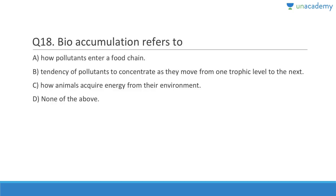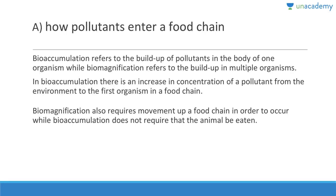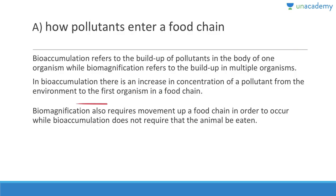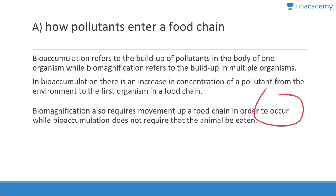Question eighteen: Bioaccumulation refers to how pollutants enter a food chain. Answer is A. Bioaccumulation refers to the build-up of pollutants in the body of one organism, while biomagnification refers to the build-up across multiple organisms. In bioaccumulation, there is an increase in concentration of a pollutant from the environment to the first organism in a food chain. Biomagnification requires movement up a food chain, while bioaccumulation does not require the animal to be eaten at all.